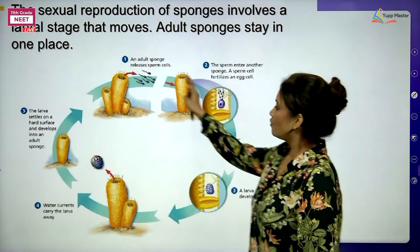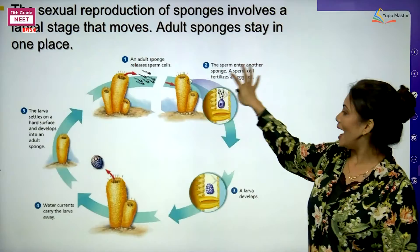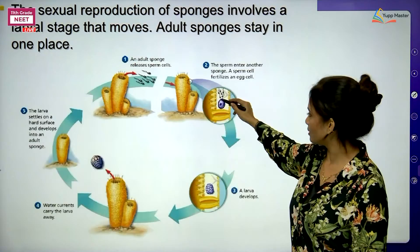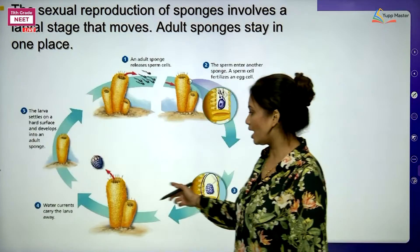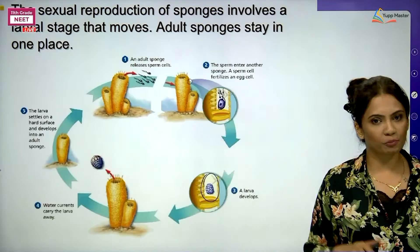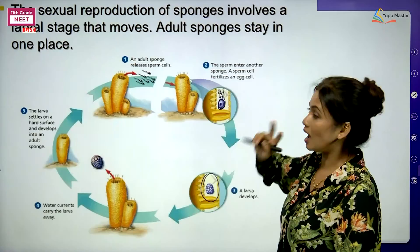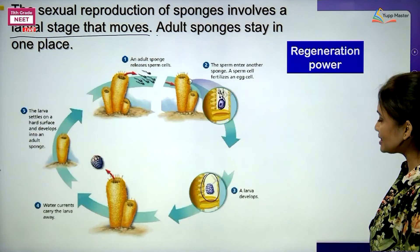In sexual reproduction, the male sponge releases sperms which fertilize the egg in the female sponge. A larva is formed, released into water, carried away, and ultimately settles down to become an adult sponge. The larval stage moves, whereas adult sponges always stay in one place. Sponges have a good amount of regenerative power - their regenerative system is well developed.